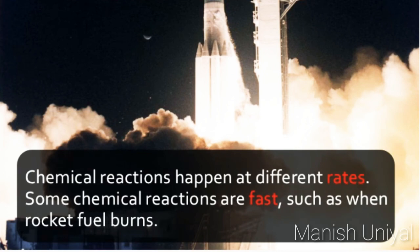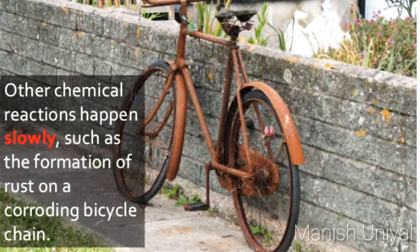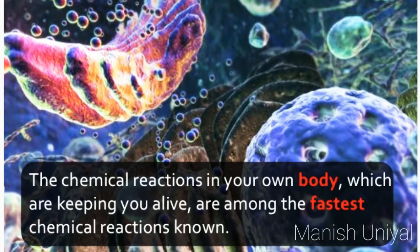Chemical reactions happen at different rates. Some chemical reactions are fast, such as when rocket fuel burns. While other chemical reactions happen slowly, such as the formation of rust on a corroding bicycle chain. The chemical reactions in your own body, which are keeping you alive, are among the fastest chemical reactions known.